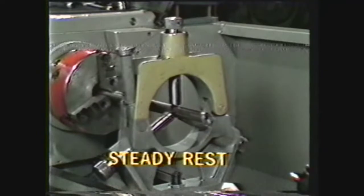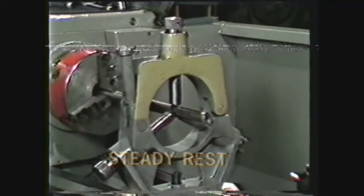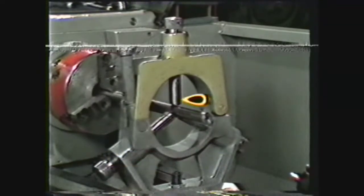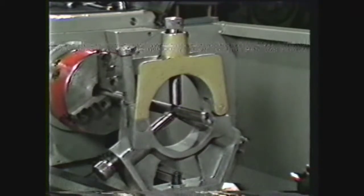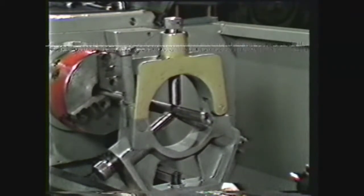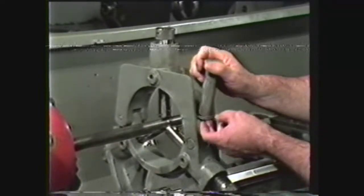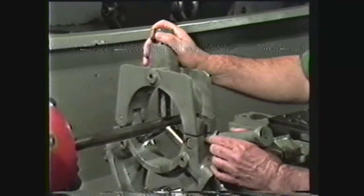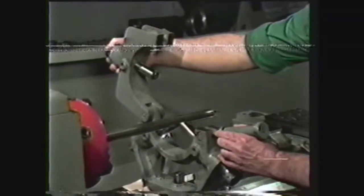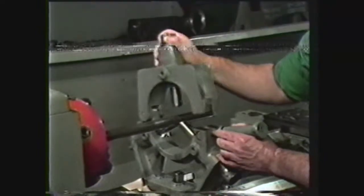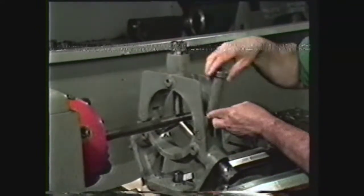The steady rest, sometimes called a center rest, consists of a frame and three adjustable jaws which support the work at some point along its axis. The overarm is hinged so the work can be inserted and removed without disturbing the jaw adjustment. This feature is important in machining duplicate pieces.